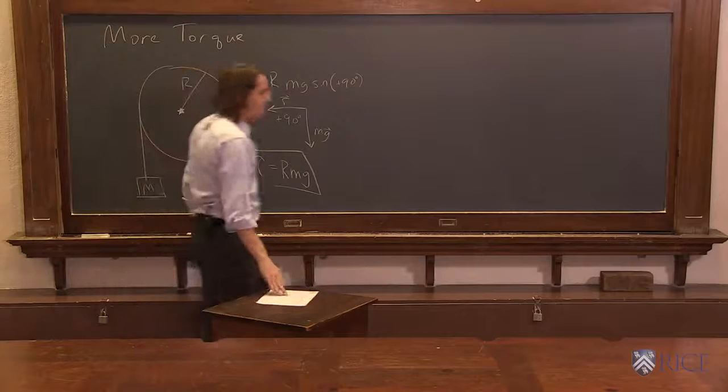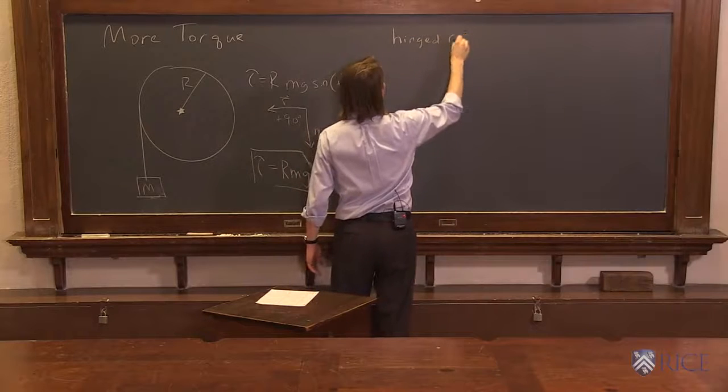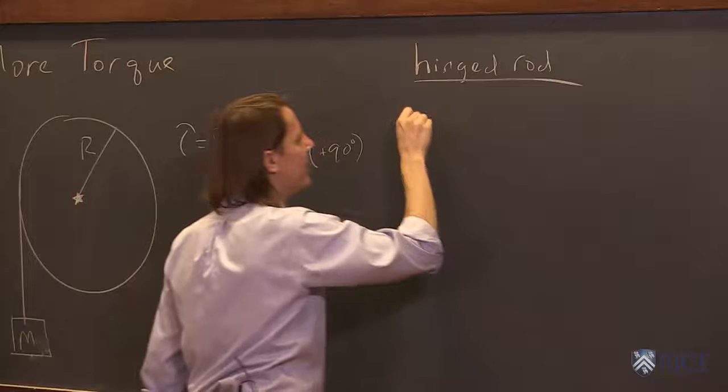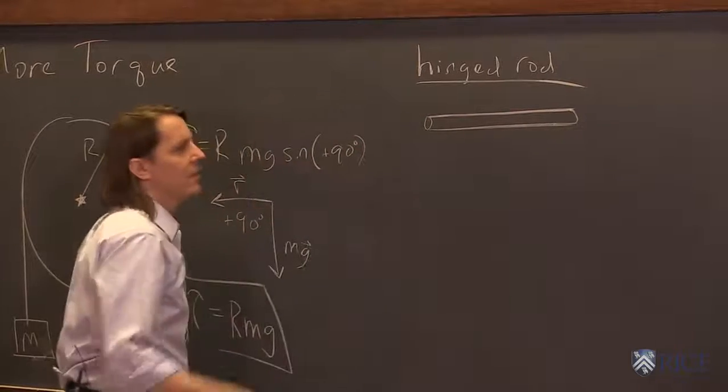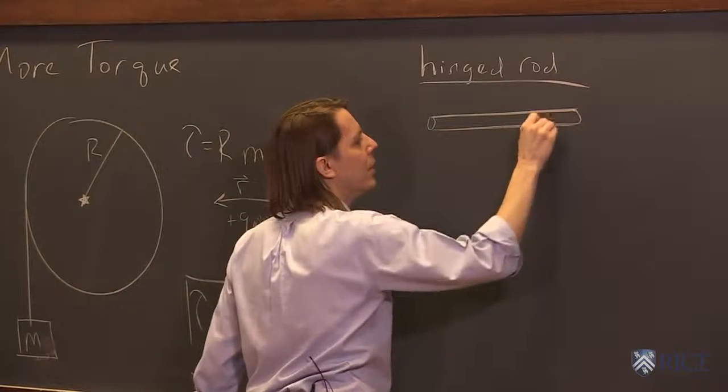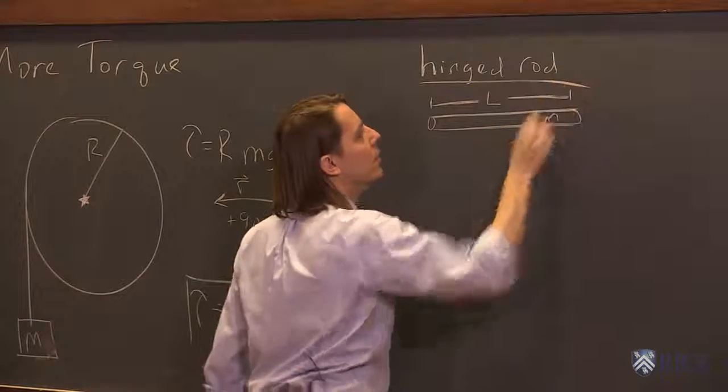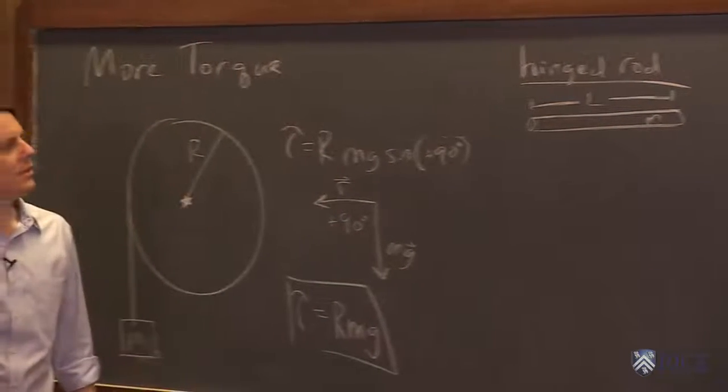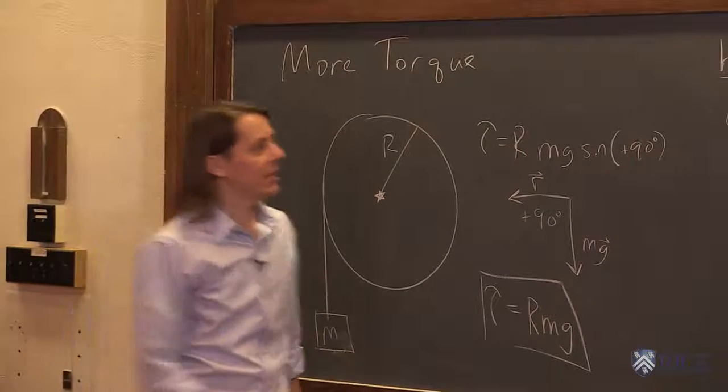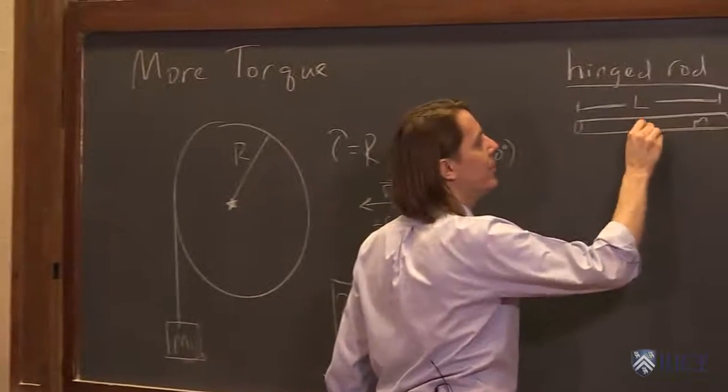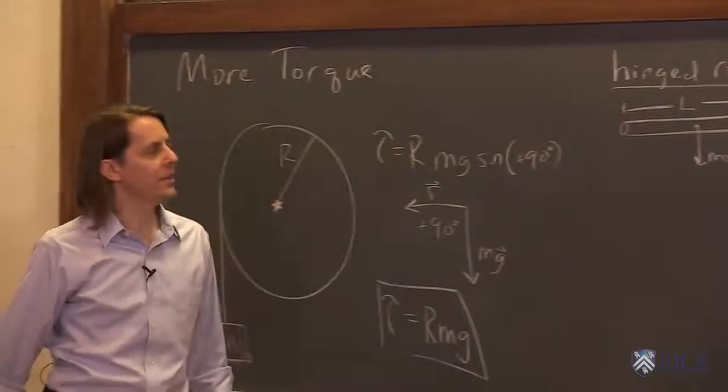Let's look at a hinged rod. And by that, I just mean a long rod like this that has a mass m and it has a length we'll call big L. It's just sitting there. And we want to know, what's the torque on it? Because it has weight, right? It has a center of mass somewhere about right here. Therefore, we have mg pulling it down, acting at its center of mass.